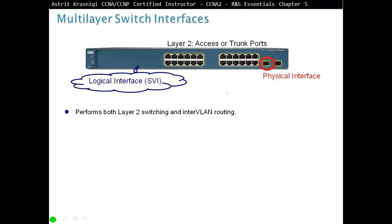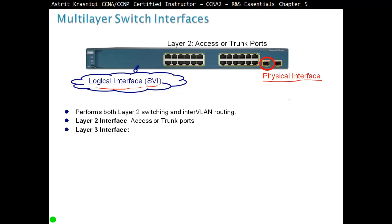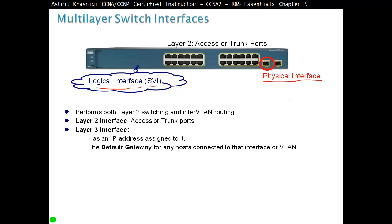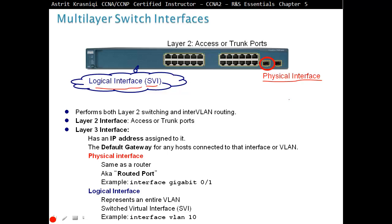On a multi-layer switch, we have logical interfaces called SVIs — Switch Virtual Interfaces — or we have physical interfaces. Multi-layer switches perform both Layer 2 switching and InterVLAN routing. Layer 2 interfaces can be either an access port or trunk port. Layer 3 interfaces have an IP address assigned and serve as the default gateway for hosts connected to that interface or VLAN. Physical interfaces are the same as a router port — for example, interface GigabitEthernet 0/1. A logical interface represents an entire VLAN — a Switch Virtual Interface — for example, interface VLAN 10.